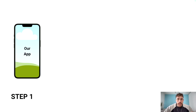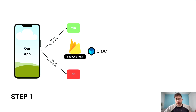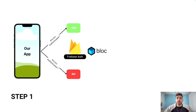Now let's see how the app is going to work. There are two steps. Step one is the whole authentication process, and step two is requesting an image from ChatGPT. For step one, we have our app and we ask: are you authenticated? If you are authenticated, we do one thing; if you're not, we do something else. For checking authentication, we're using Firebase Authentication and also BLoC.